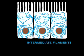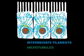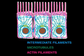Eukaryotic cells contain a complex network of filaments — intermediate filaments, microtubules, and actin filaments — that provide the cells with strength, structure, and movement.